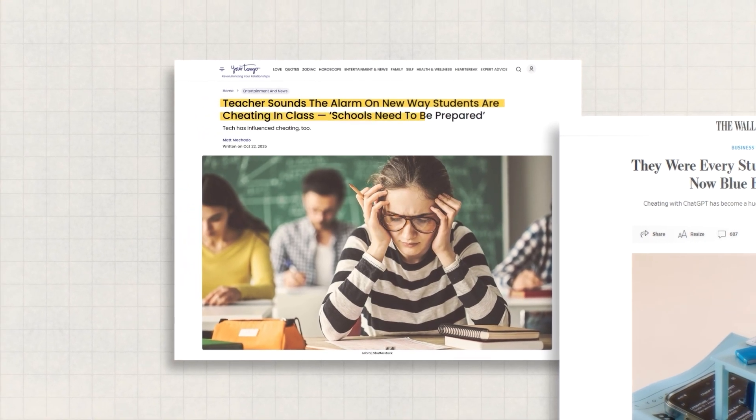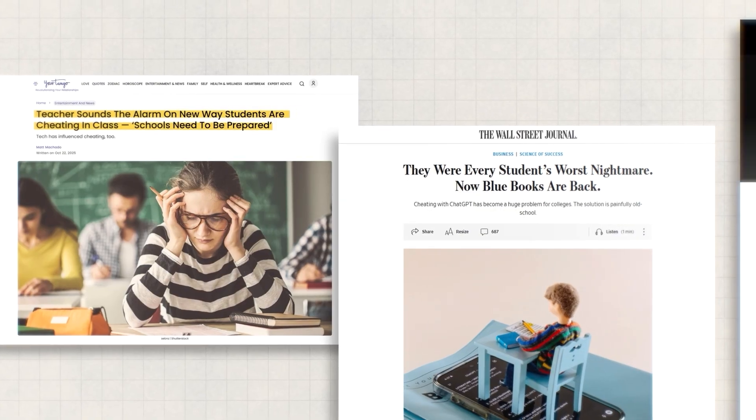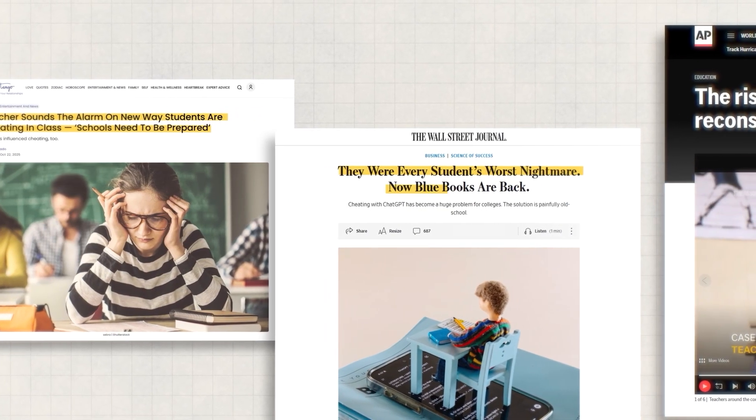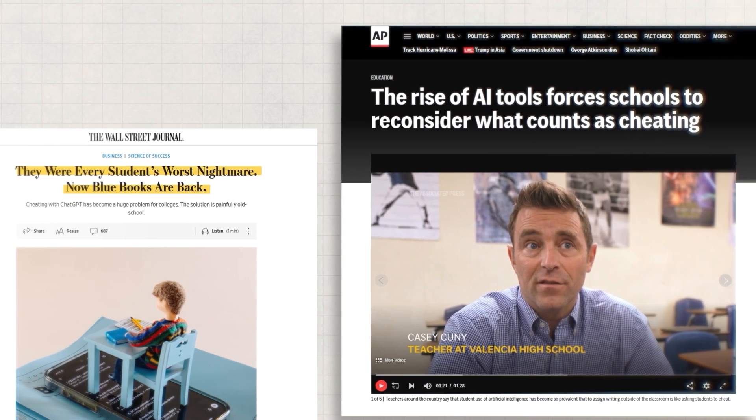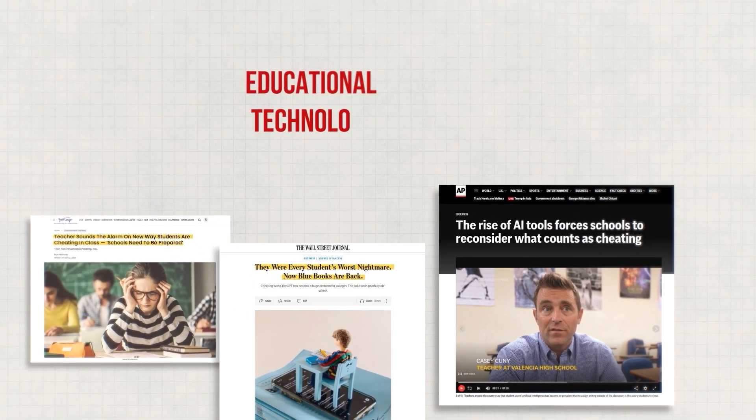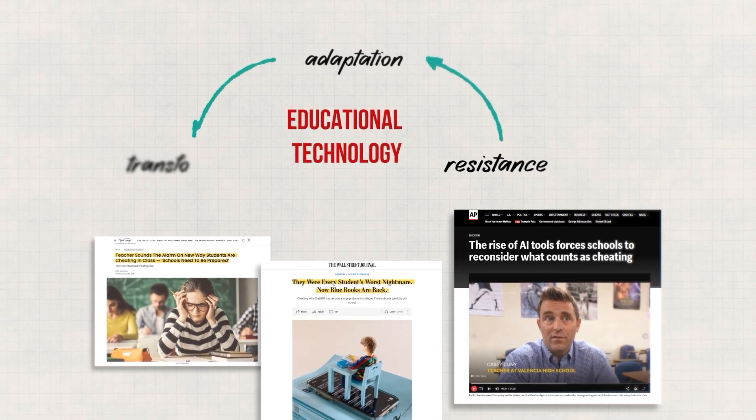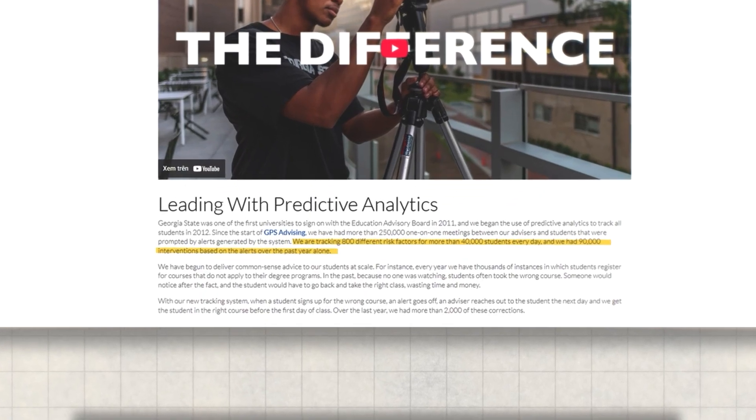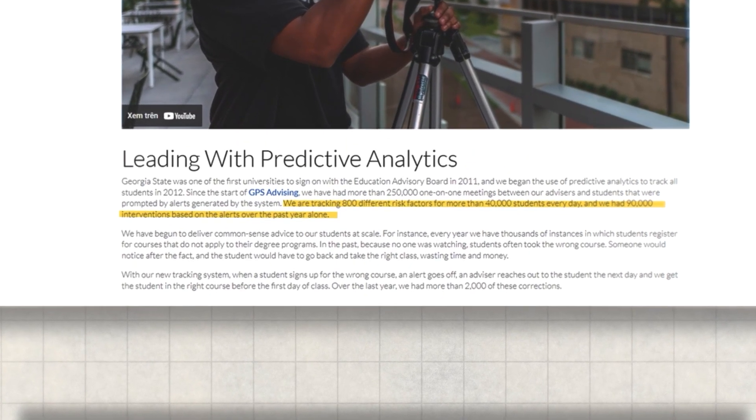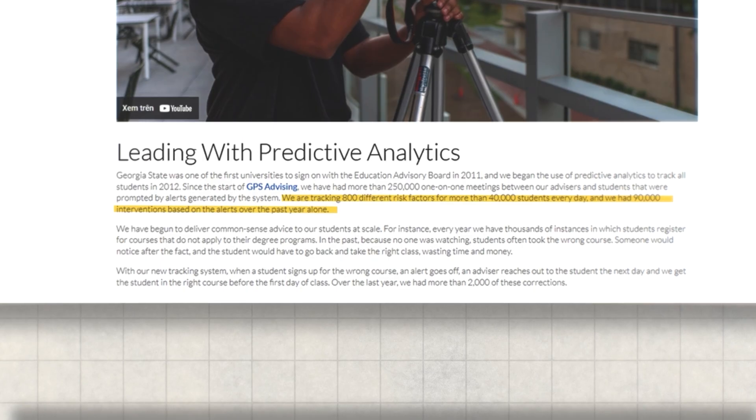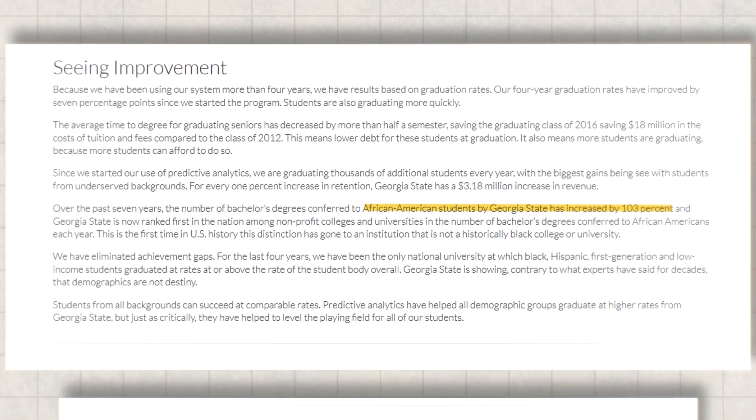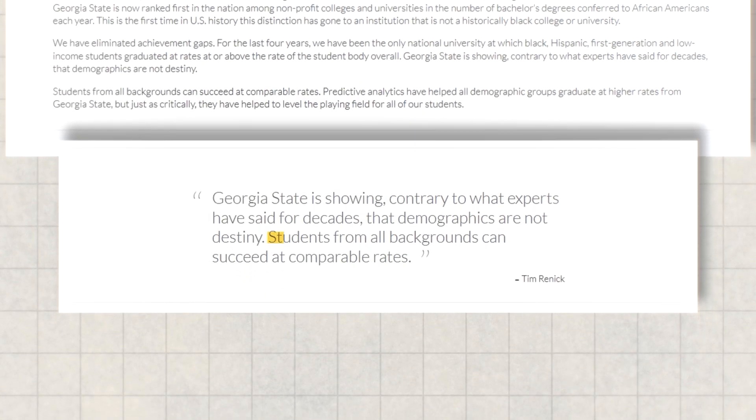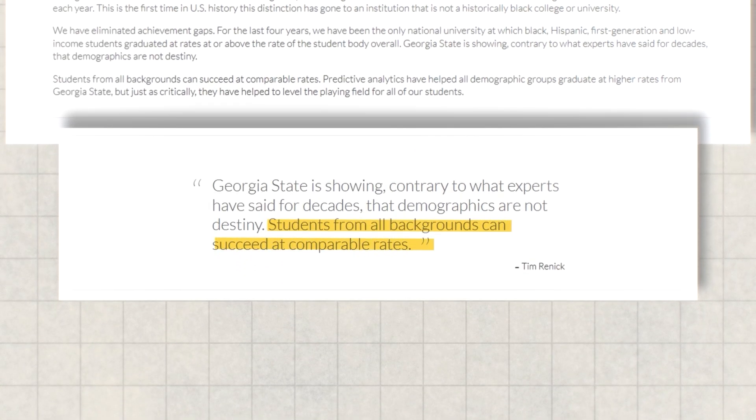So now, the cheating arms race officially escalates. So universities panic. Blue Book exam sales spike 80% because they want to move back to handwritten tests. Honor codes rewritten. Some believe this is the end of education as we know it. But in reality, this is the same pattern that's played out with every educational technology. Resistance. Adaptation. Transformation. Which brings us to today. Where schools like Georgia State University use AI to track 800 risk factors for 40,000 students daily. The result? A 103% increase in African American graduation rates. Showing strong trends toward eliminating achievement gaps.